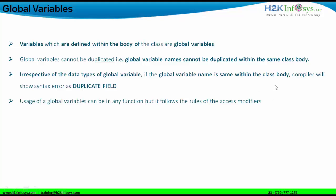Access modifiers will not be discussed in depth at this point, as that will be part of the OOP concepts. But as far as global variables are concerned, you can define access modifiers for them. Dependent on the access modifier, a global variable can be used across other classes present in the same package or different packages. A project can have one or more packages, and each package has its own class files.